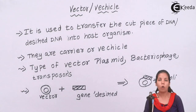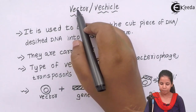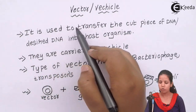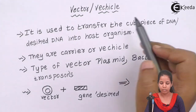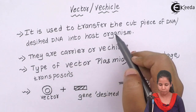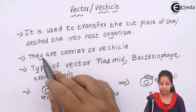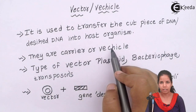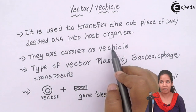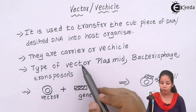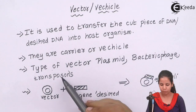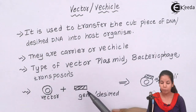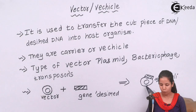Let us recap what vectors or vehicles are. A vector is used to transfer the cut piece of DNA, or your desired gene of interest, into host organisms. Vectors are carriers or vehicles used to transfer genetic material from one place to another. The types of vectors available are plasmid, bacteriophage, and transposon. You take a vector, insert your gene of interest to form recombinant DNA, and then put it into the host organism.